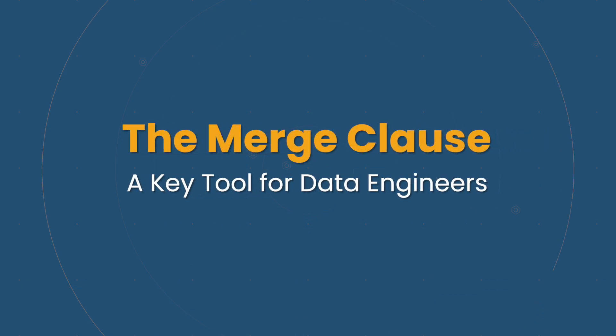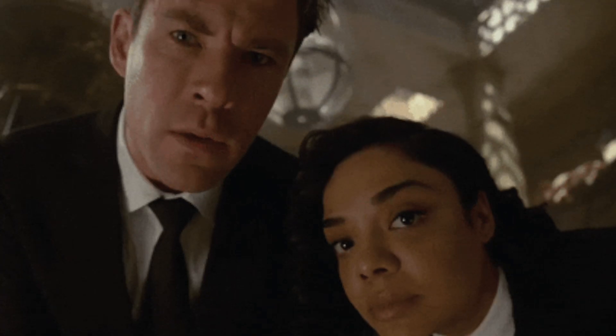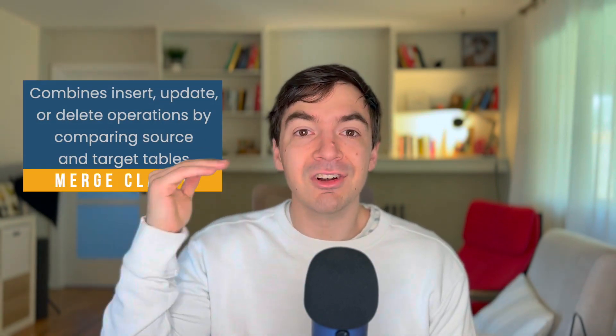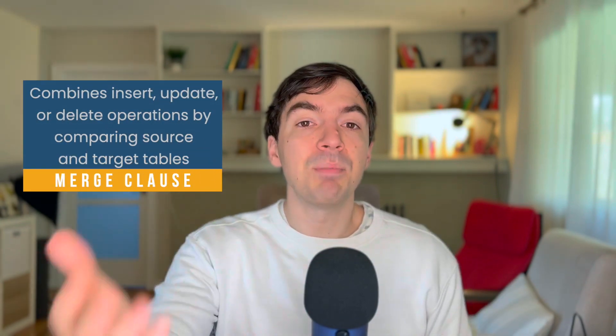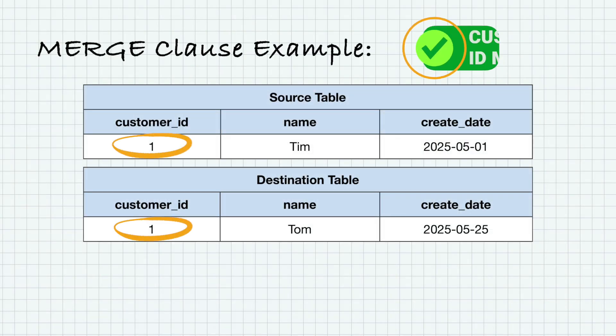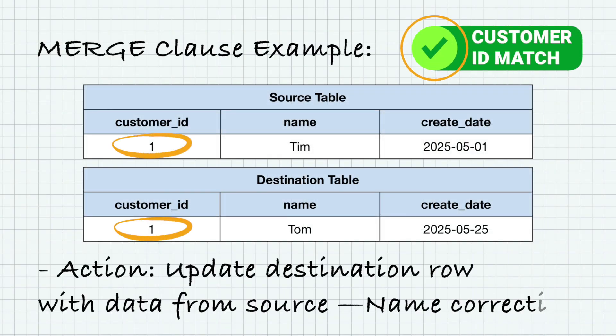This is when you likely start to see queries more specific to data engineers than data analysts. You'll see the clause MERGE. If you haven't heard of MERGE, here it is: MERGE basically allows you to write an insert, update, or delete situation based on comparing two tables. You take a source table and a destination table and say: if you find an ID in both of these tables that match, do something. Generally when you run into that match, you'll have a combination of inserting a new row and updating the old row.